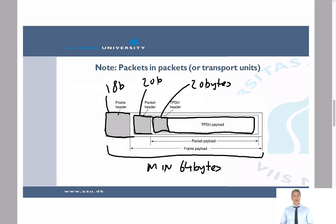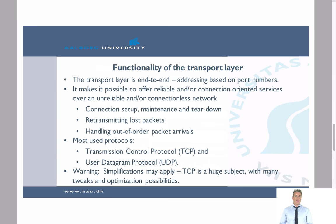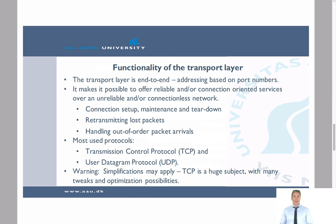Let's move on to the functionality of the transport layer. The transport layer is end-to-end, meaning that we have two entities and they just have to focus on the communication with each other. The transport layer doesn't really care about what is happening inside the network, or how many routers we are passing or which paths we are taking — this is all left to the network layer. The transport layer is end-to-end, it's based on port numbers, and it makes it possible to offer reliable and connection-oriented services even over an unreliable or connectionless network.